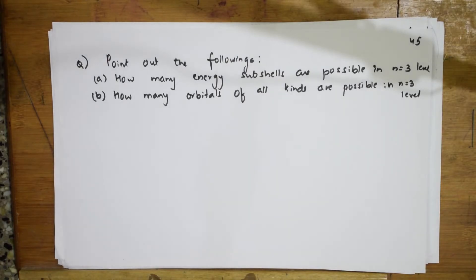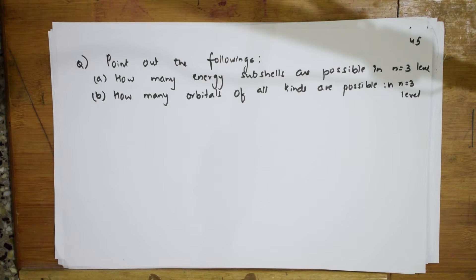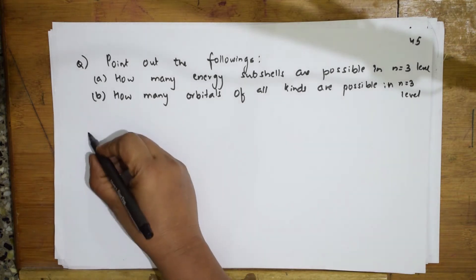Welcome back students to one more session. Till now we have done different numericals — almost 44 numericals based on Heisenberg's uncertainty principle, de Broglie's equation, photoelectric effect, Bohr's hydrogen atom, as well as numericals based on calculation of electrons, protons, and neutrons. Today we are going to start with numericals based on quantum numbers.